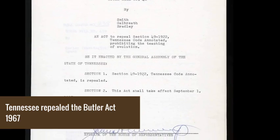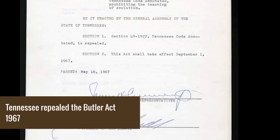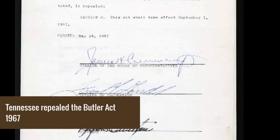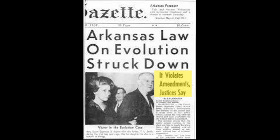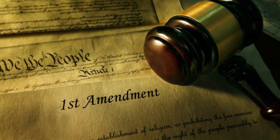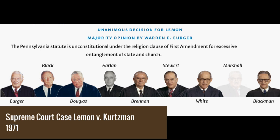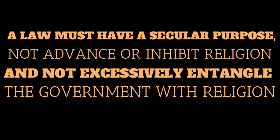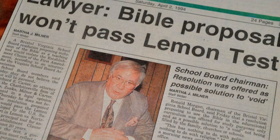In 1967, Tennessee repealed the Butler Act, and the U.S. Supreme Court followed in 1968 with Epperson v. Arkansas, a decision resting on the Establishment Clause of the First Amendment, prohibiting Congress from establishing religion. Subsequently, in 1971, the Supreme Court case Lemon v. Kurtzman found Pennsylvania's non-public elementary and secondary education act unconstitutional, leading to the Lemon Test — affirming that a law must have a secular purpose, not advance or inhibit religion, and not excessively entangle the government with religion. This gave progressives the upper hand in court whenever evolutionary biology was challenged by creationism.